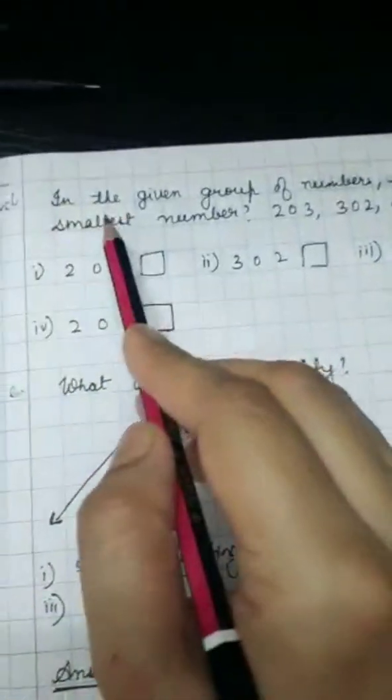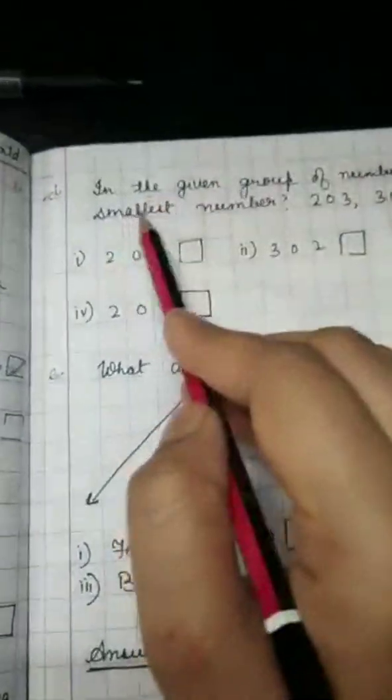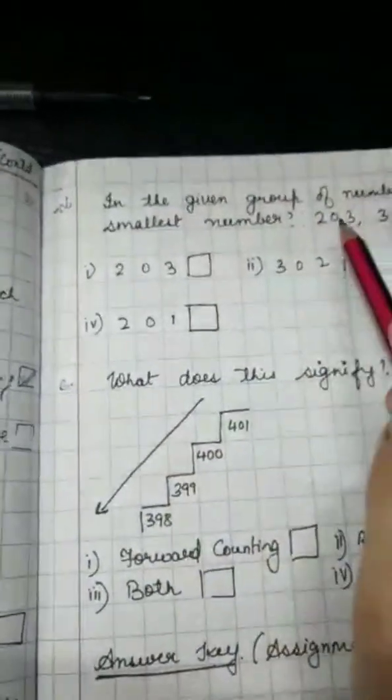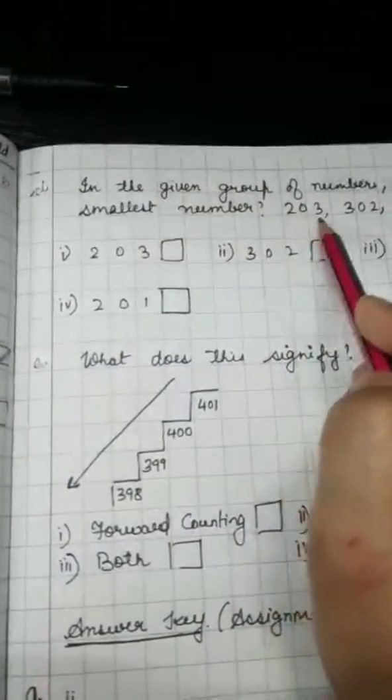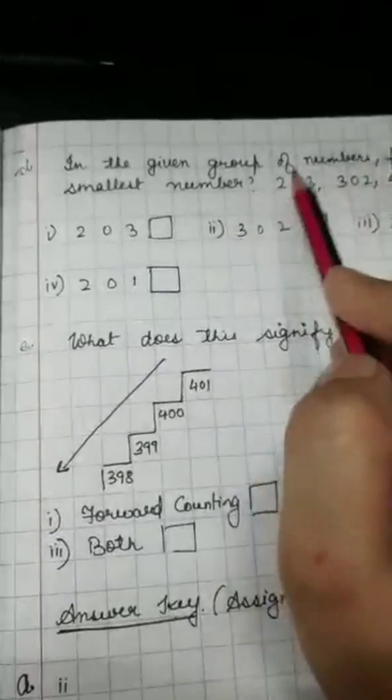Now, question D is, in the given group of numbers, find the smallest number. Now, just now I have explained you that you will see the place value and then you will decide, okay?